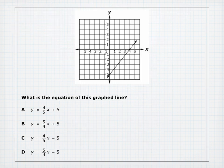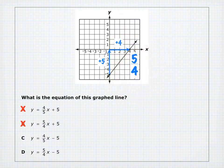What is the equation of the graphed line? The Y-intercept is at negative 5, so eliminate A and B (they have positive 5). Count the slope: rise up 5, run right 4, giving slope 5 over 4. The only answer with slope positive 5 over 4 and Y-intercept negative 5 is D.